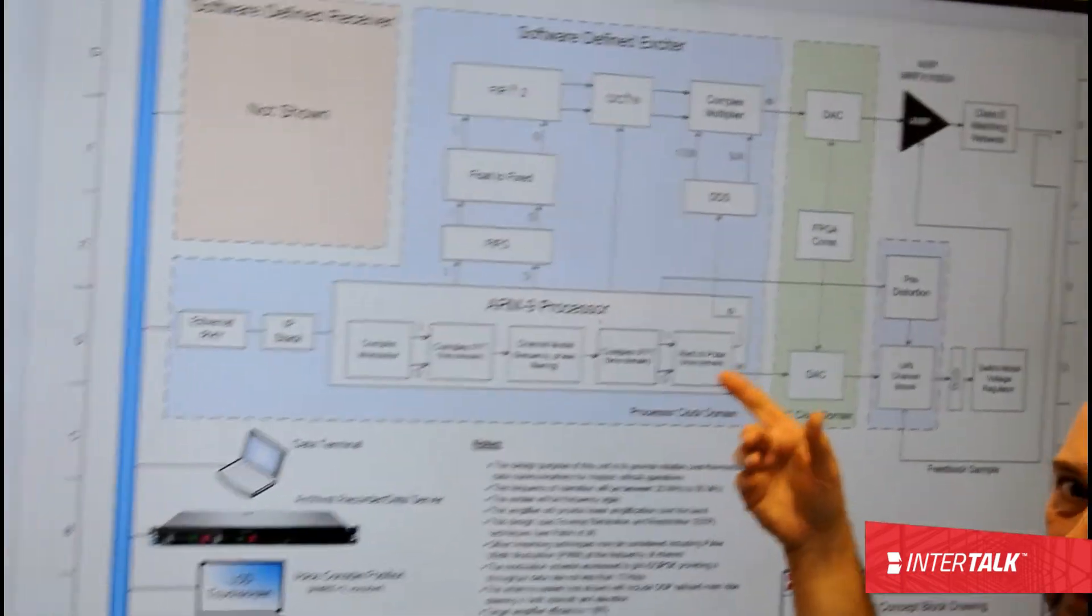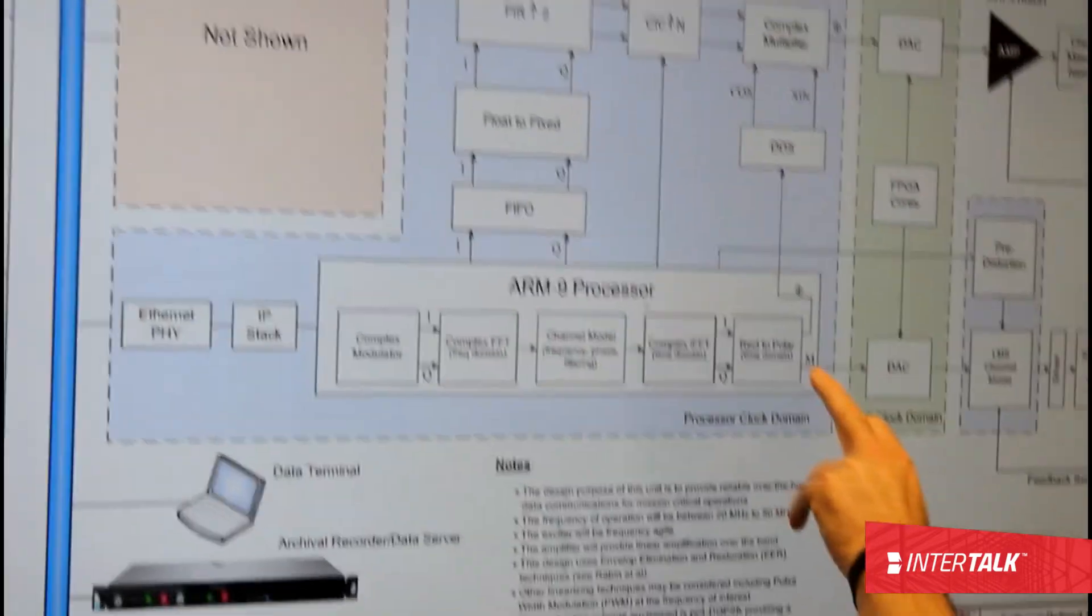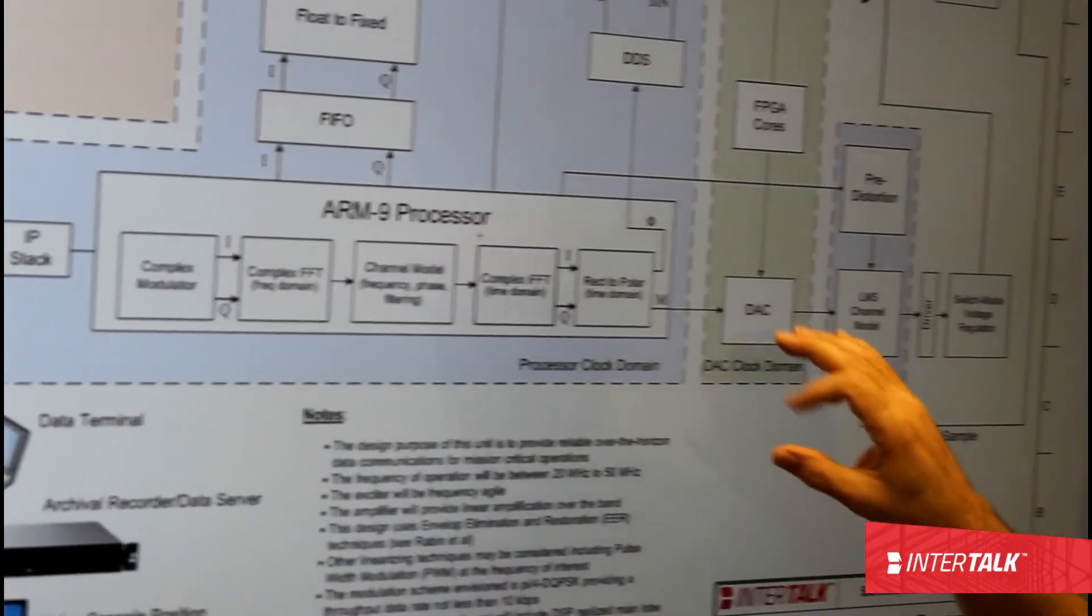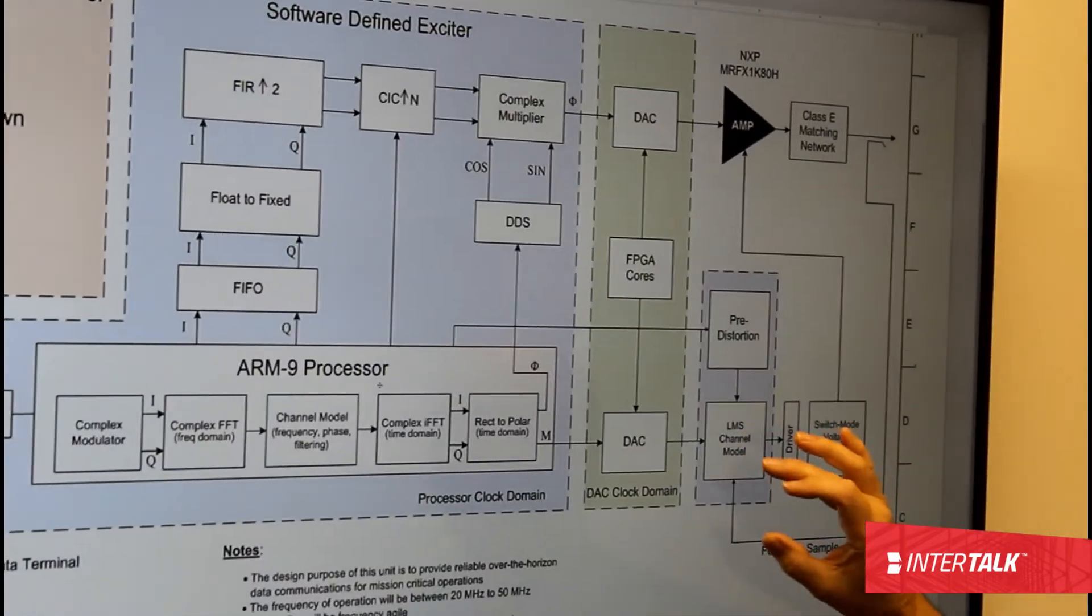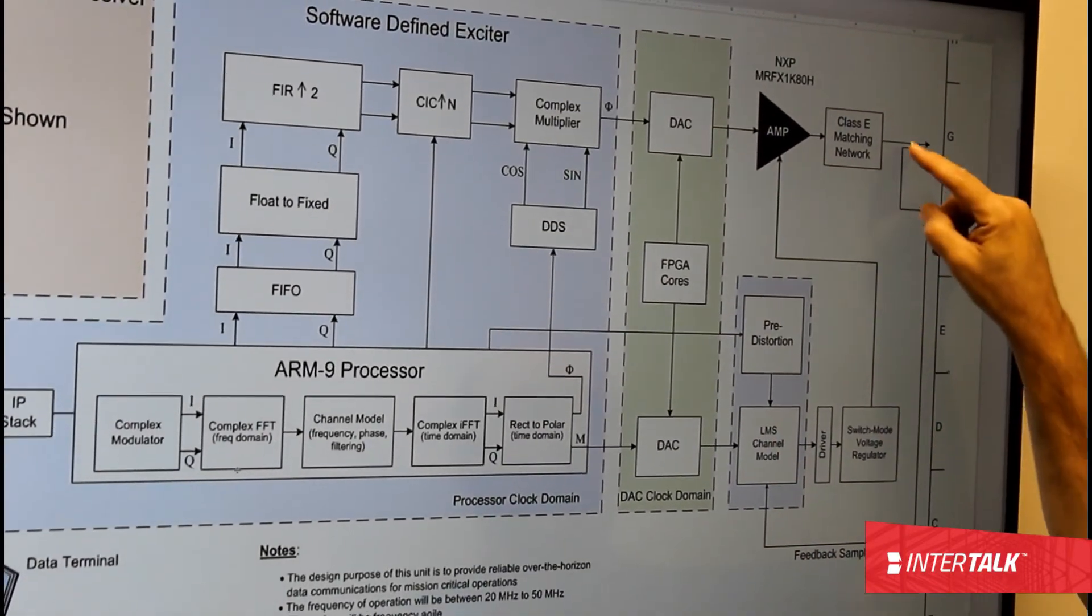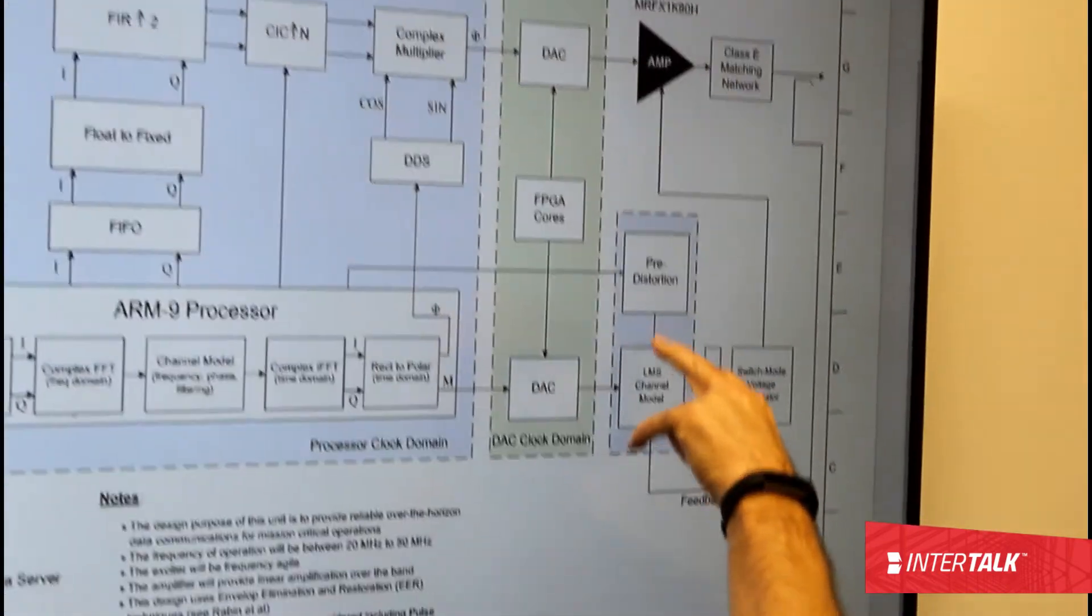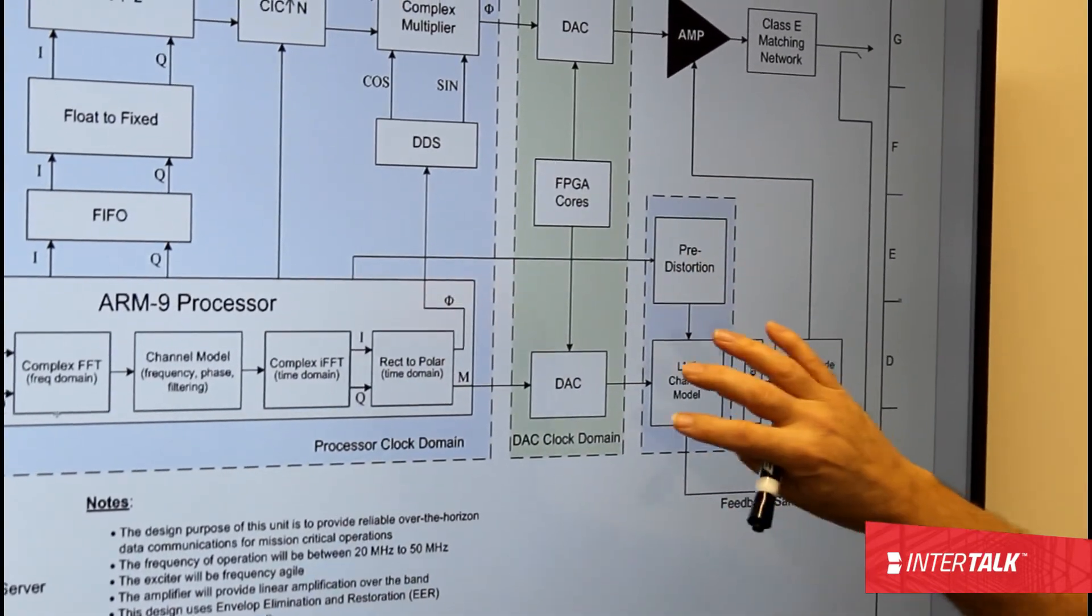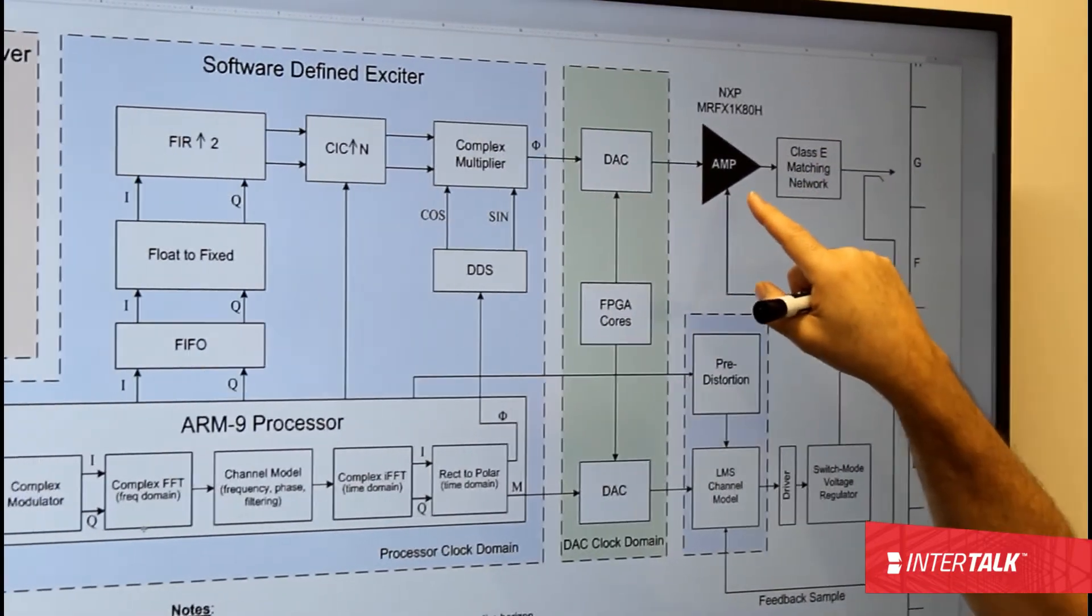And then we are doing what essentially is a rectangular to polar coordinates change here. We are taking the I and Q channels into a magnitude and phase angle. The magnitude goes through to the FPGA through the DAC. And the DAC through another channel model right here, which uses the least mean squared algorithm for optimization. It will take a sample out of the output of the amplifier, and it uses that sample plus a pre-distortion mechanism, which is also run by the ARM processor, to essentially control a switch voltage regulator here, which controls the amplitude of the signal here.